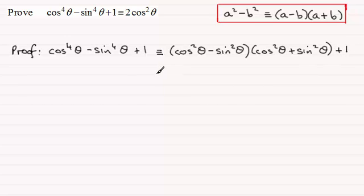So what I'm going to do next is take this bracket here and we should realize that this bracket is one. Cos squared theta plus sine squared theta remember is always identical to one.